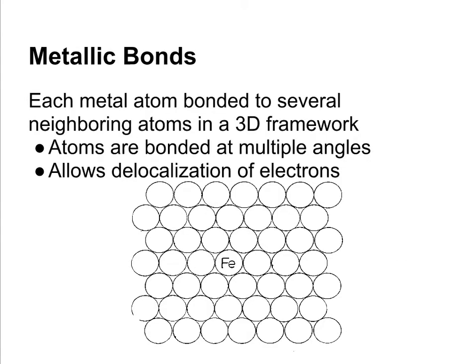metallic bonds. Metallic bonds are what hold metals together. In a metallic bond, each metal atom is bonded to several neighboring atoms in a 3D framework.